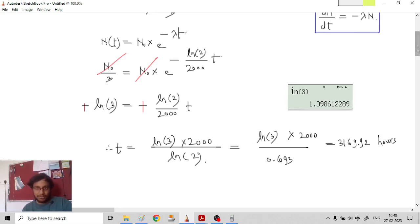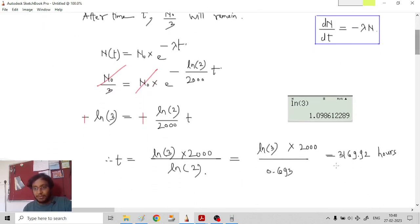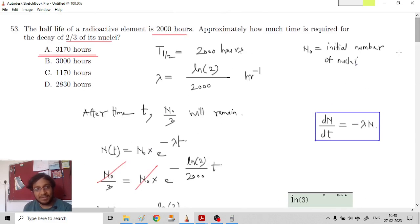Do we have any option closer to this? Closest to us? Oh yes, that is 3170. 3170 is very close to 3169.92. In fact, if you don't take so many decimals or so many digits after the decimal point for ln 3 and ln 2, if you take 0.693 and ln 3 as 1.099 or even 1.1, I think you'll get 3170. But anyways, we've got the answer. The answer is option A.